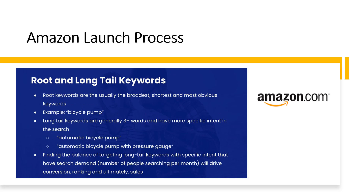When we talk about keywords, there are two types: root keywords and long-tail keywords. Root keywords are usually the broadest, shortest, and most obvious keywords — for example, 'bicycle pump.' Long-tail keywords are generally three or more words with more specific intent — for example, 'automatic bicycle pump,' where the word 'automatic' signals specific intent. 'Automatic bicycle pump with pressure gauge' is even more specific to features. Finding the balance of targeting long-tail keywords with specific intent that have search demand — the number of people searching per month — will drive conversion, ranking, and ultimately sales.